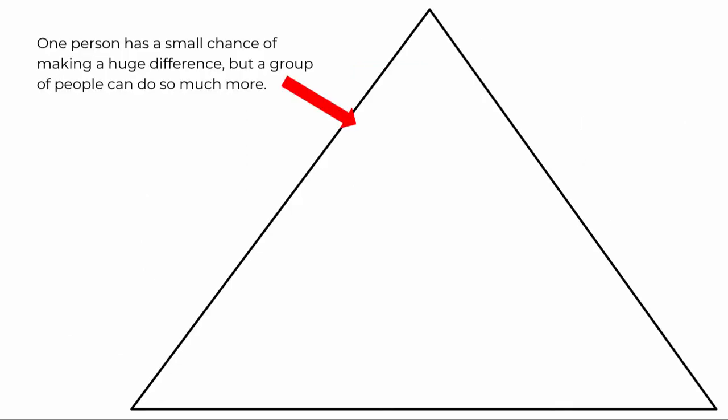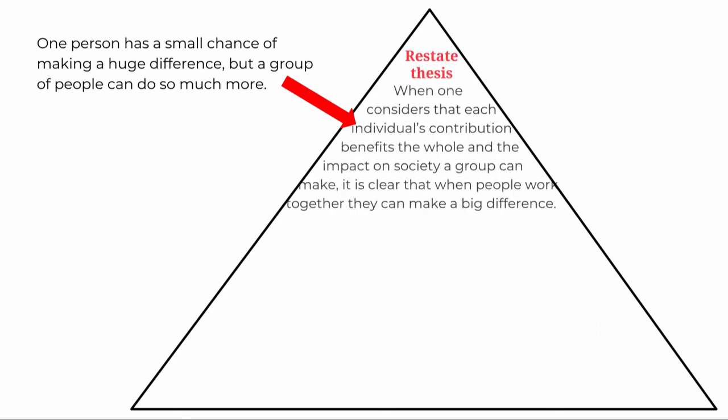So here is an example. The example I gave you in the body paragraphs flipped assignment was, one person has a small chance of making a huge difference, but a group of people can do so much more. So if I'm restating my thesis, I'm going to use the sentence frame that I gave you.